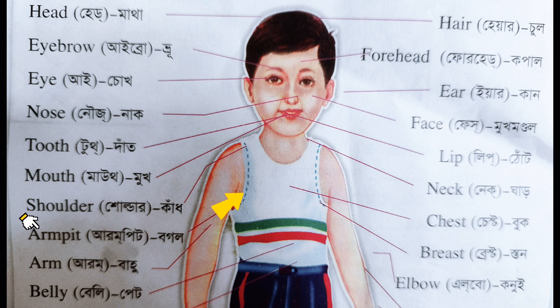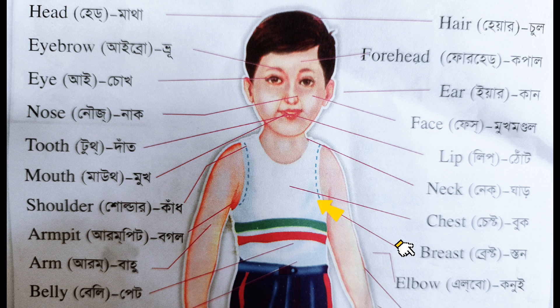Armpit — the Bangla meaning of Armpit is 'Buggle'. Breast — the Bangla meaning of Breast is 'Stun'. Arm — the Bangla meaning of Arm is 'Bahu'.